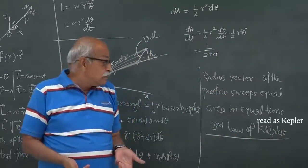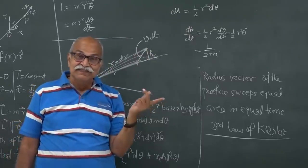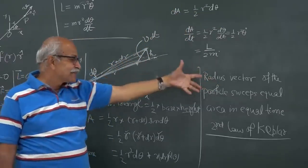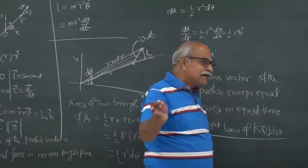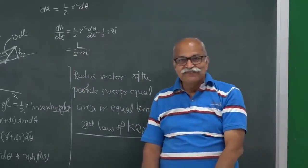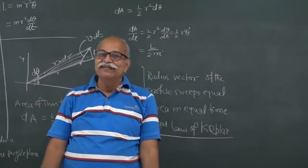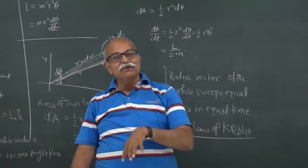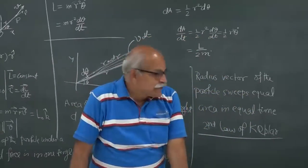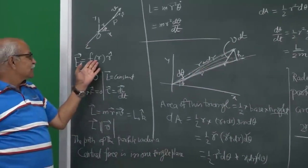Kepler's laws were given in the context of planetary motion — the motion of planets around the sun. The first law states planets move in elliptical orbits with the sun at one focus. The second law is that the radius vector from the sun to the planet sweeps equal area in equal time. The third law states the square of the time period is proportional to the cube of the semi-major axis.